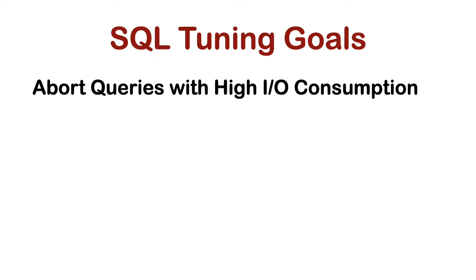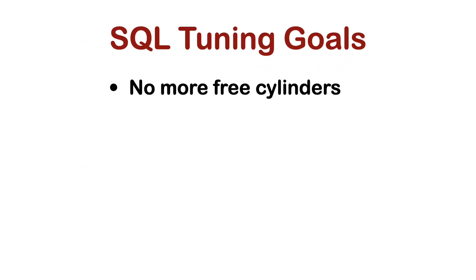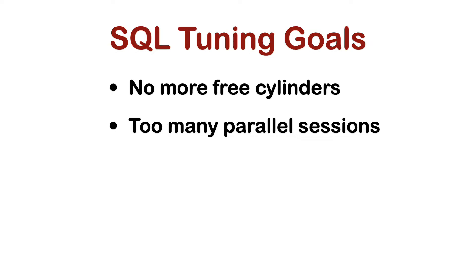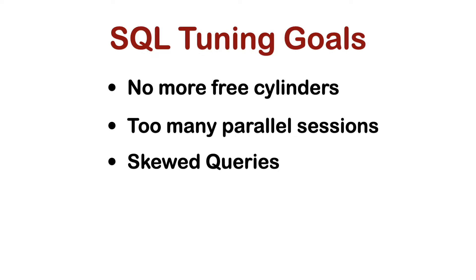There can be several reasons why our query aborts due to insufficient Spool Space. One reason might be that there are no more free cylinders on the Teradata system. We must prevent the situation where all cylinders are full at all costs. Usually, the database administrator creates a separate database to block space and avoid the system running out of free cylinders. No more Spool Space can also be caused by too many parallel sessions of the same user, or by skewed queries or volatile tables.